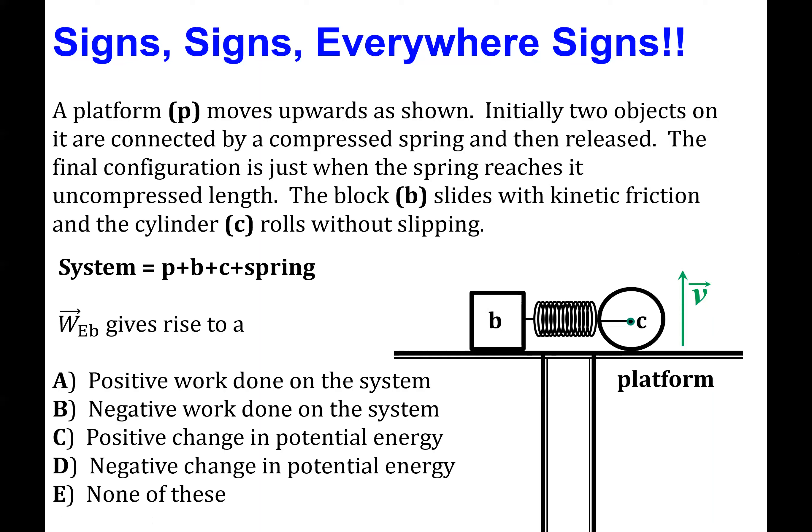Therefore, A and B are possible options. Now, to decide which one is the correct one, we can draw the weight as a vector acting on block B. And then, as we did before, we draw the displacement vector.